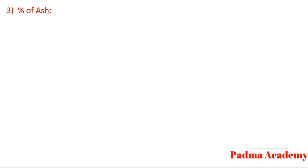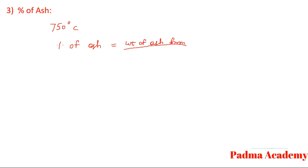The percentage of ash is calculated by heating the coal sample at 750 degrees Celsius for one hour. Therefore, the percentage of ash is equal to weight of ash formed upon weight of coal into hundred.